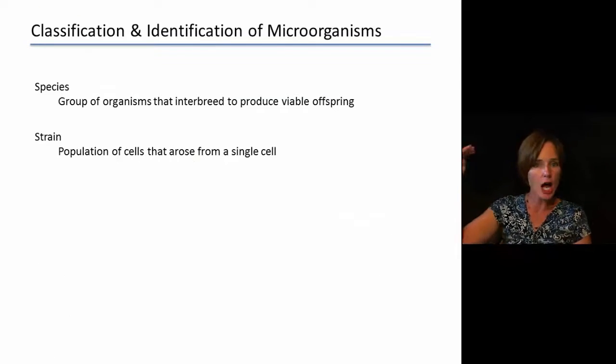If we talk more about that top layer, that species taxonomic level, typically species are defined as groups of organisms that interbreed. And then they're capable of producing viable, so living offspring that are also going to be fertile offspring.